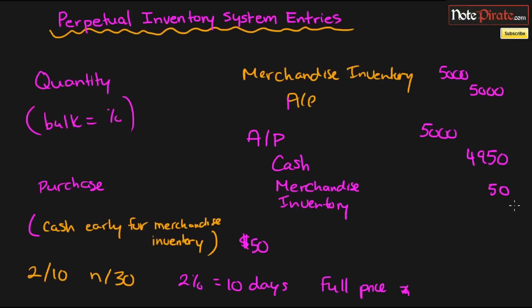So that is the four different entries for our purchasing of the perpetual inventory system.